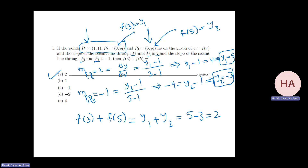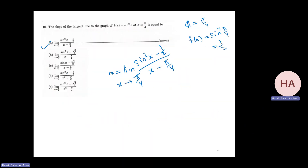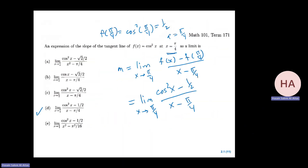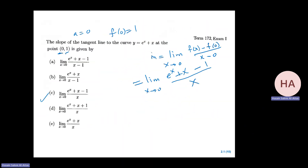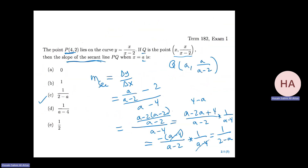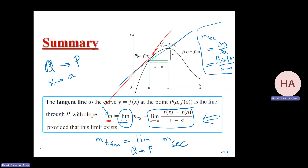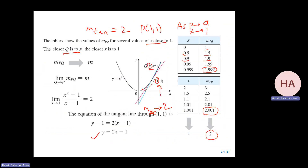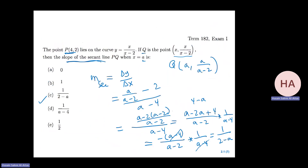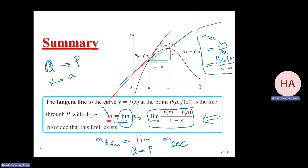I think this is enough for this section. It's a quick section. We have mainly this idea: the slope of the tangent, which I can find through this formula. Before that, I get the slope of the secant. Thank you.